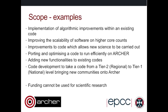Here are some examples of suitable ECSE projects. One example might be the implementation of algorithmic improvements to an existing code — for instance, changing to a more efficient solver. You may want to improve the scalability of software, taking it from a few hundred cores to a few thousand. You might be making improvements to functionality that allows new science to be carried out — though we don't fund the carrying out of that science itself, only the code improvements which enable it.